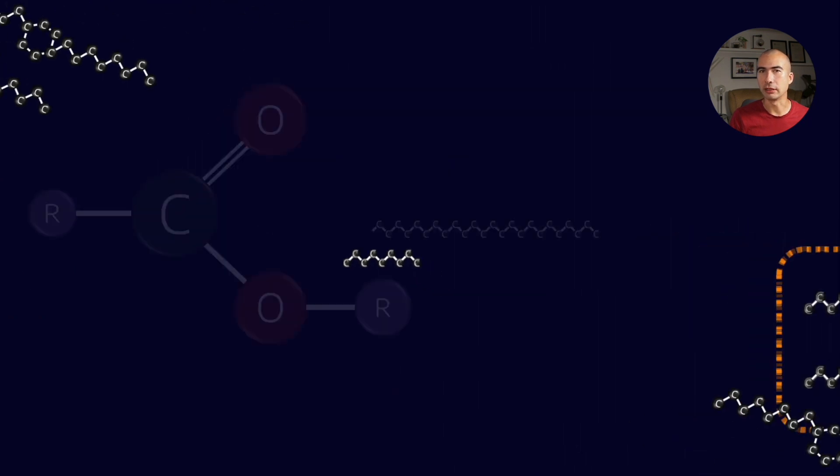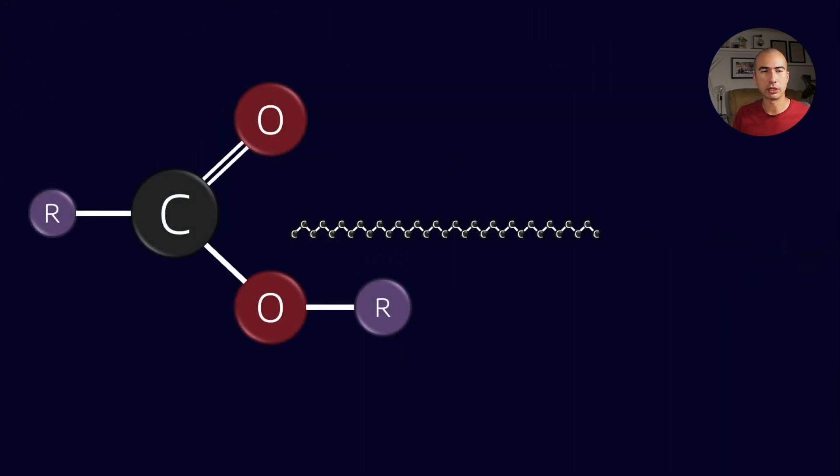Now the way that we can prevent this is by disrupting the crystallization process. So there are these molecules called polymethacrylates. You might recognize that name because polymethacrylates are also a VI improver, and we'll get into the differences between them.